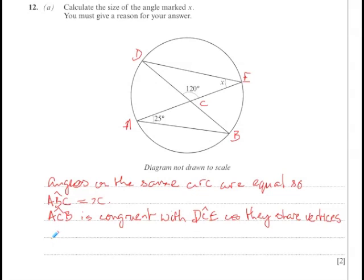So ACB is equal to 120 degrees. Angles on a triangle add up to 180 degrees.